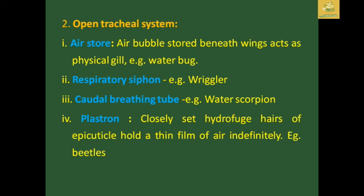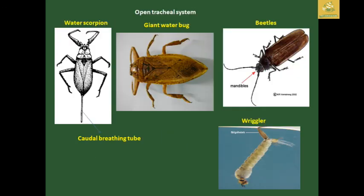In the open tracheal system: water bugs store an air bubble beneath their wings which acts as a physical gill for storing oxygen. The respiratory siphon is found in wing blurs — the aquatic stage of mosquitoes. The caudal breathing tube is a separate tube at the abdomen mainly found in water scorpions. The plastron uses closely set hydrofuge hairs of the epicuticle which hold a thin film of air indefinitely — this system is mainly found in beetles.